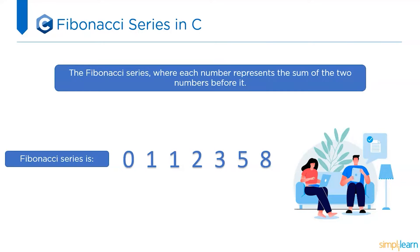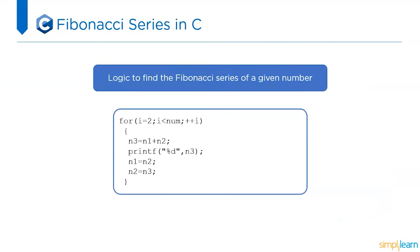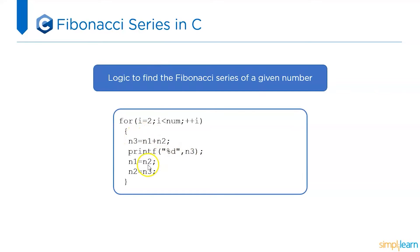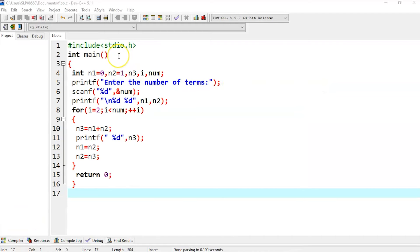So in this way it forms a Fibonacci series. Moving ahead, let's understand the program logic. As you can see, we have a for loop. Initially the i value can be 0 and 1, then we start with 2. The initial i value is 2, and it checks i less than the number we are entering. If true, n3 is equal to n1 plus n2 — it adds the previous two numbers and stores the result in n3, prints n3, then n2 is assigned to n1 and n3 is assigned to n2.